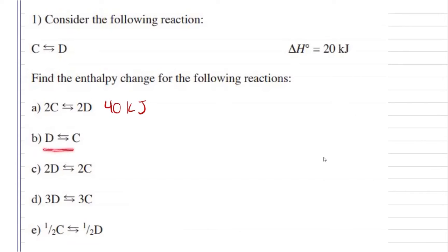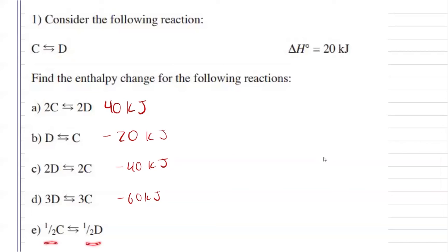For B, it is now going in the reverse direction, so if it needed 20 kilojoules, now it's going to release 20 kilojoules. For C, well that's just going to be twice as our original and in the reverse direction, so 2 times what we got for B, so negative 40 kilojoules. D is going to be 3 times as much in the reverse direction, so that's going to release 3 times as much energy, so negative 60 kilojoules. And for E, well that's going to be half as much as our original, so now it's going to need 10 kilojoules.